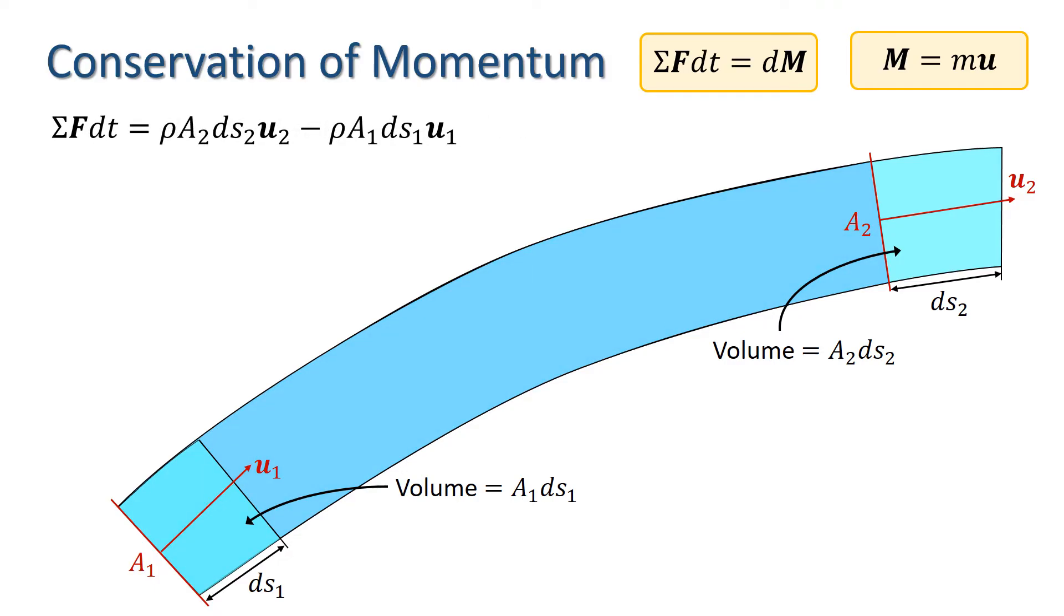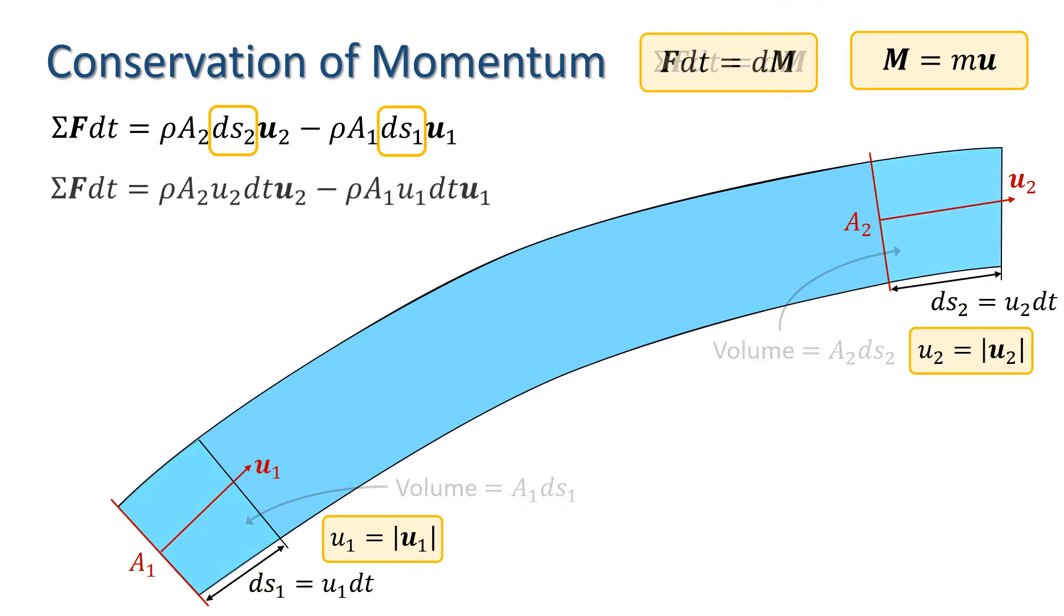If we denote the magnitude of u1 as u1 without the bold lettering as shown here and mod u2 as u2 then we have ds1 equals u1 dt and ds2 equals u2 dt. So we can substitute for ds1 and ds2 in the impulse momentum equation. We can now divide throughout by dt giving the equation shown here.